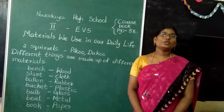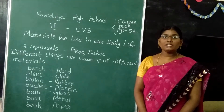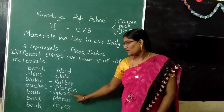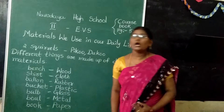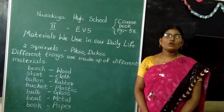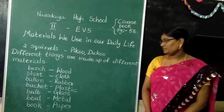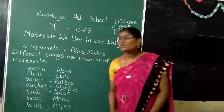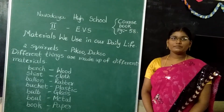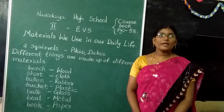Next, bulb and a gold ring — made up of which type of material? Glass. Next, see children — bowl. Bowls, spoons, and plates are made up of which type of material? Metal. And books are made up of paper.